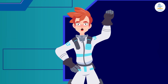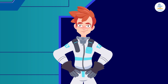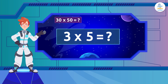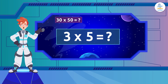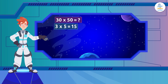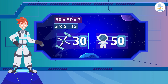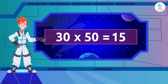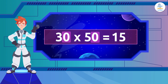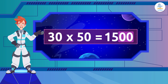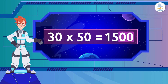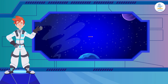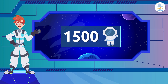We will start by multiplying the two non-zero numbers, that is 3 times 5. What result do we get from that multiplication problem? 15. Then we will count the number of zeros from the two original numbers we wanted to multiply. 30 has one zero and 50 has another. We add them to the 15 we got from multiplying 3 times 5, and we get 1500, which is the final answer.